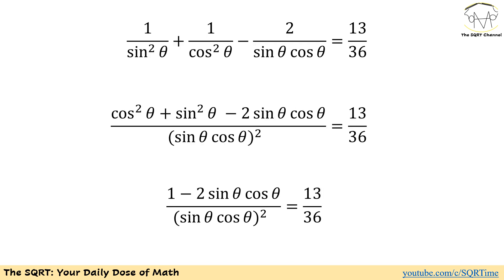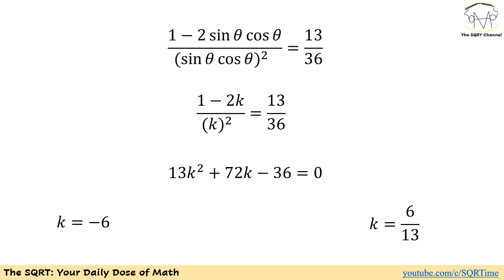Now let's simplify the equation a little bit further. We are going to use sine of theta times cosine of theta squared as the common denominator. We can use the identity sine squared of theta plus cosine squared of theta equals to 1. If we do this, we end up with 1 minus 2 sine of theta cosine of theta over sine of theta cosine of theta squared equals to 13 over 36. Notice that we have sine of theta cosine of theta in the top and bottom of this fraction. We are going to use k to represent that. Then 1 minus 2k over k squared equals to 13 over 36.